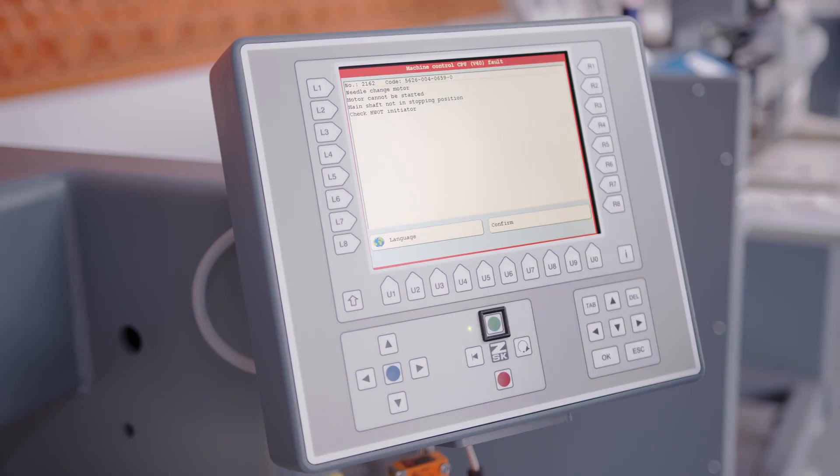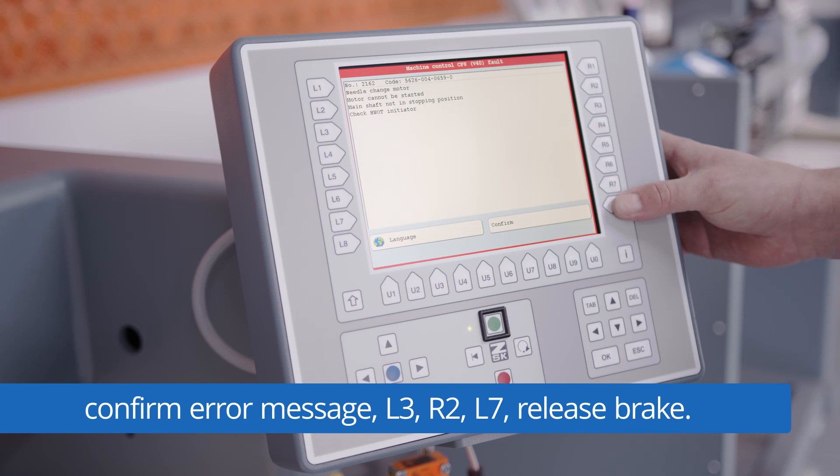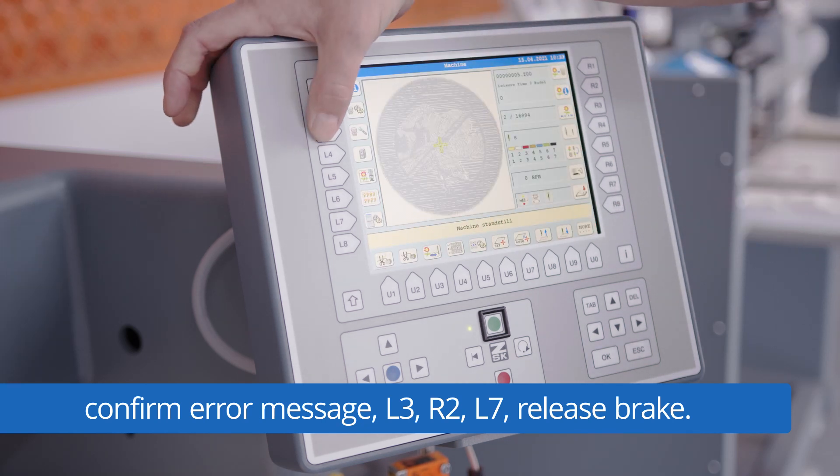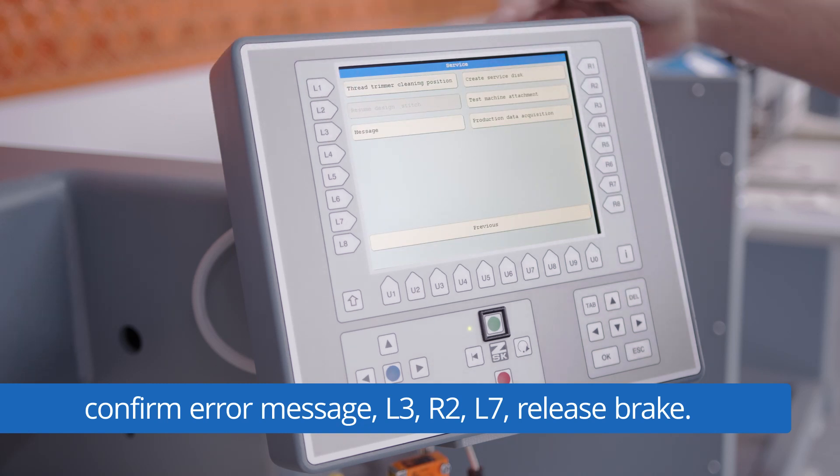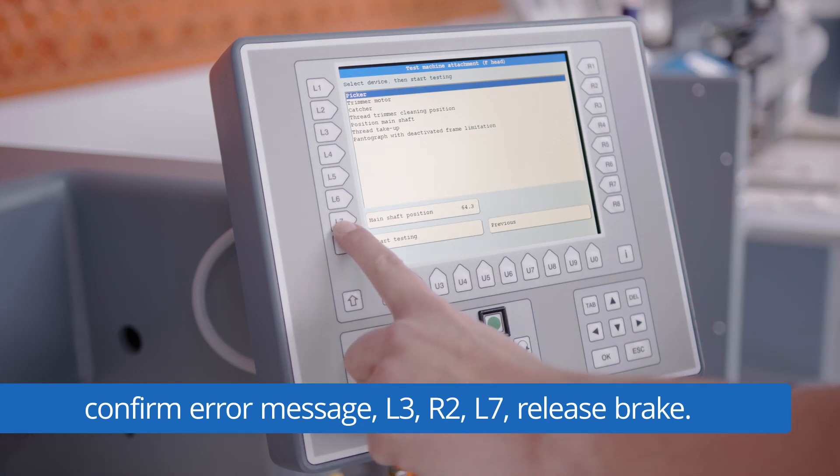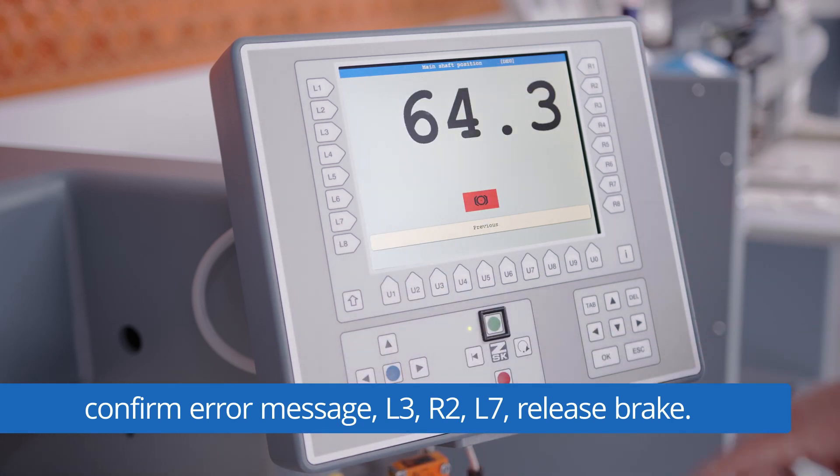In the next step we have to release a brake to turn the upper shaft to pin it. Therefore we have to confirm the error message. We have to go to service on L3, we are going to test machine attachment on R2 and here we are going to L7 main shaft position and we can release a brake with the button right to ZSK.